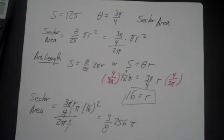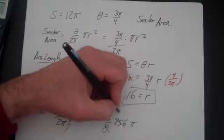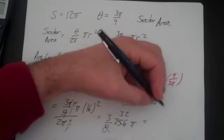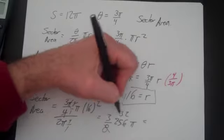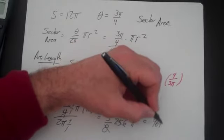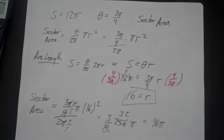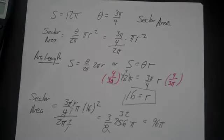And 256 goes into 8, 32 times. So that's 3 times 32, so that's 96 pi. And that's a much more involved problem. It's the same idea.